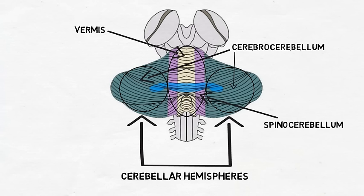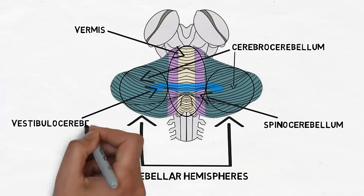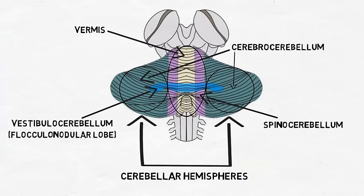The vermis is the area of the spinocerebellum that runs along the midline of the cerebellum. It is involved with posture, limb movement, and eye movements. The vestibulocerebellum, also called the floccular nodular lobe, is important to maintain equilibrium, balance, and posture.